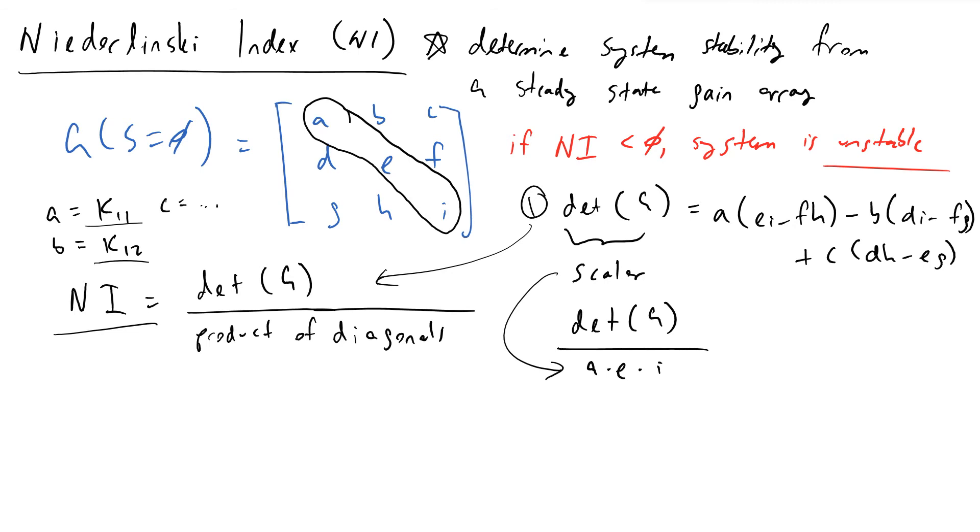And so if this term is less than zero, if it's some kind of negative quantity, if we have a negative determinant, or this product ends up being negative, we can end up with an unstable system.